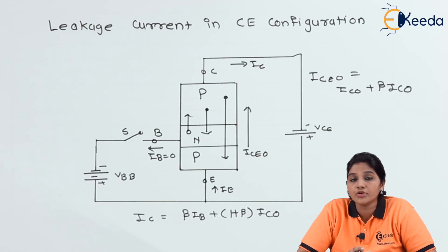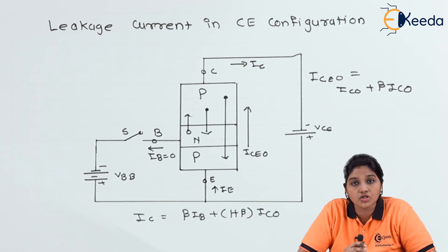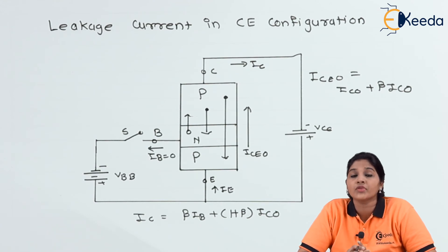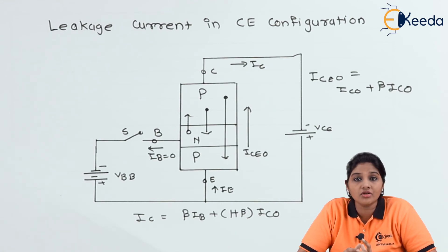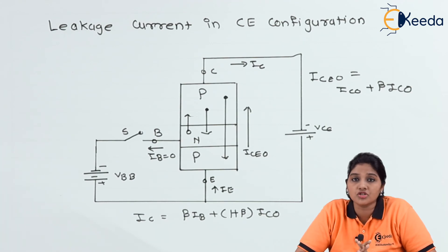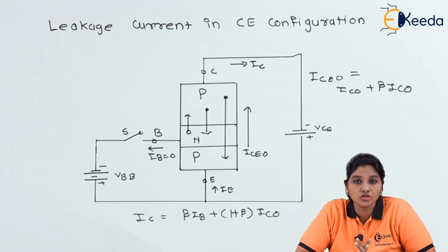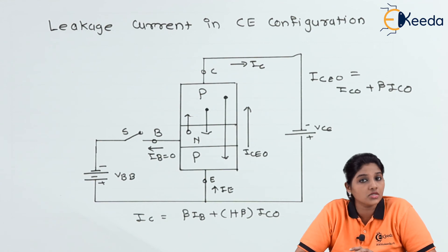This is what describes the operation of leakage current in common emitter configuration. The collector current is produced because of normal transistor action and also because of the reverse saturation current. The electrons are considered as minority carriers and are generated due to the effect of temperature — called thermally generated minority carriers. Diffusion of these minority carriers across the base-emitter junction produces the reverse saturation current.